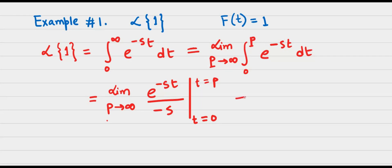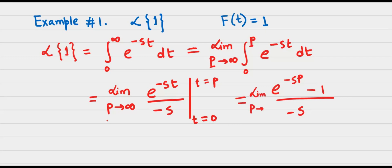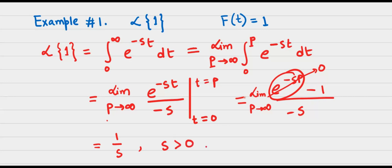So if we substitute, we get e to the power negative sp over negative s, and then minus 1, because e to the power negative 0 is 1. Under this limit, only the first term is affected. If we take the limit, it goes to 0, and all we are left with is 1 over s, provided that s is greater than 0. So the result is L of 1 equals 1 over s, provided s is greater than 0.